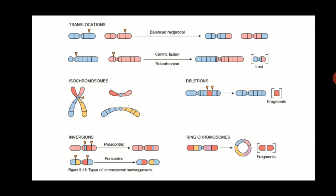Isochromosome formation occurs when the break in the centromere is horizontal. Normally, the break through the centromere should be vertical so that each daughter chromatid has one short arm and one long arm. But when the break is horizontal, one daughter chromatid gets both short arms and the other gets both long arms. This is known as isochromosome formation.